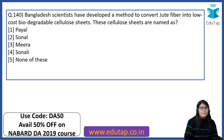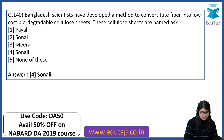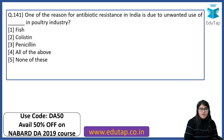Bangladesh scientists developed a method to convert jute fiber into low-cost biodegradable cellulose sheets — these are named Sonali. Mark this question; it is a little different. One of the reasons for antibiotic resistance in India is due to unwanted use of colistin in the poultry industry.